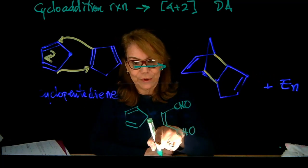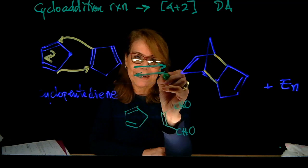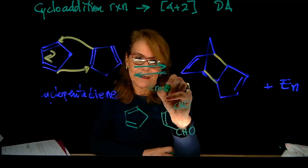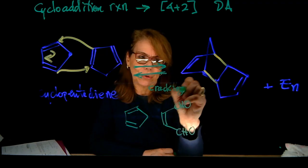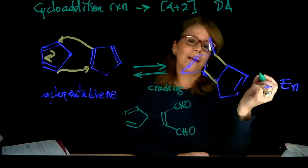So before doing this reaction, typically at the lab, what we do is the cracking. And cracking the dimer is doing the retro-Diels-Alder. So how that happens?